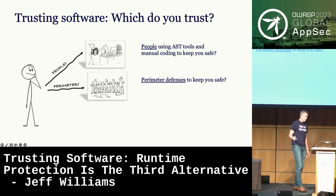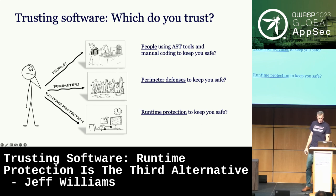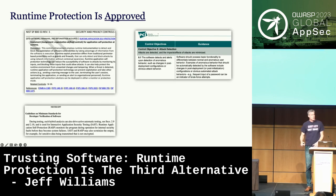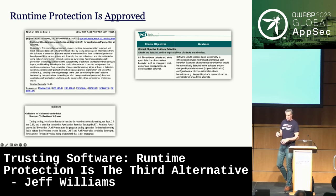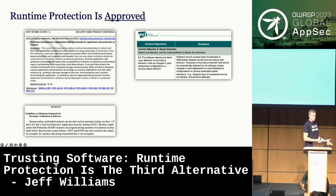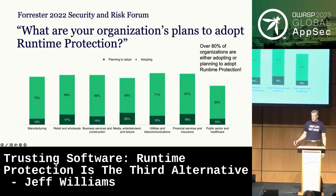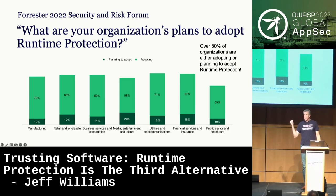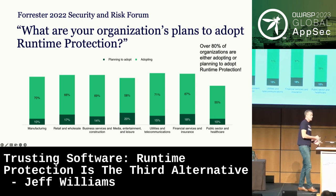Today I'm going to talk about a third alternative called runtime protection. It's approved — it's listed in OWASP 853, the NIST application security minimum testing standard, and is part of the PCI standard. There are a number of RASP vendors, including my company, but we're just one of many. A Forrester study says over 80% of organizations are either adopting or planning to adopt runtime protection in 2023. If you haven't tried or used it, you really should investigate it.